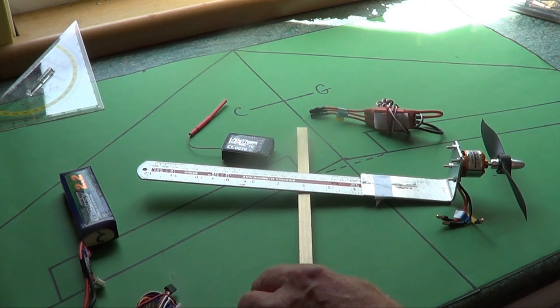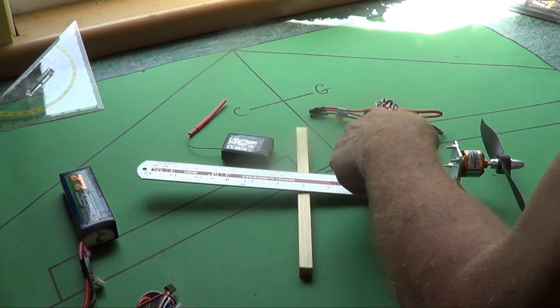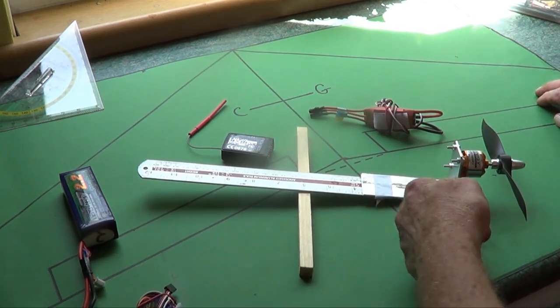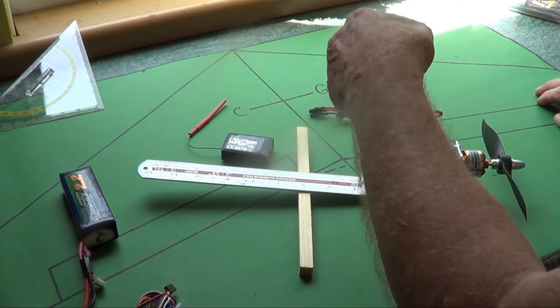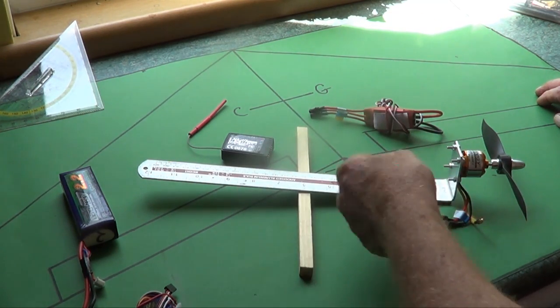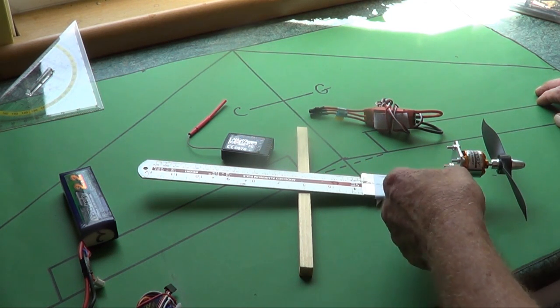First of all, you'll need either a ruler—mine being 12 inches for the root chord. But if it's larger or smaller, you need a piece of aluminum or a piece of plywood, it doesn't really matter.